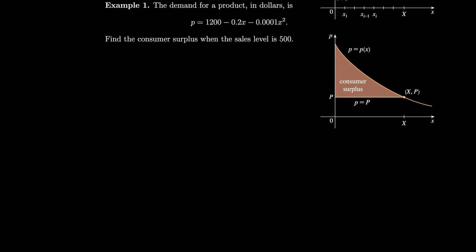We're given the sales level 500, so that's going to be capital X. Capital P is 1200 minus 0.2 times 500, because capital P is lowercase p at the value capital X, minus 0.0001 times 500 squared, which is 1075. So now we have this point over here.